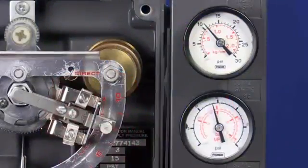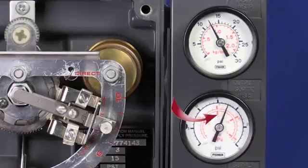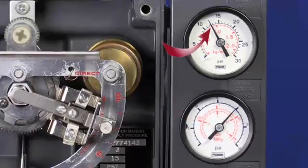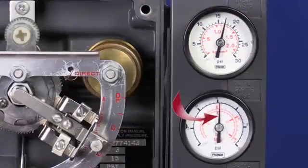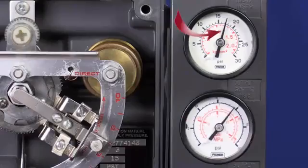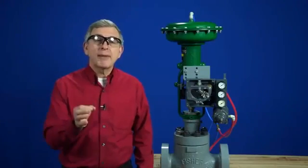This is step six. If it saturates too soon, or before 14 and a half, move the flapper assembly to a smaller number. If it saturates too late, or above 15, move the flapper to a larger number. Every time you move the flapper assembly, though, you must go back and reset the zero adjustment and then check the span again.